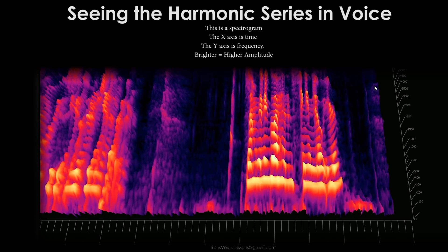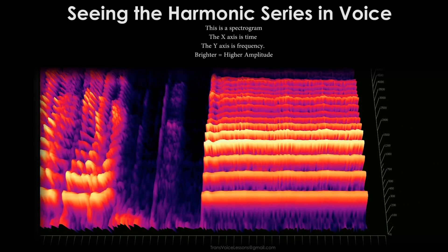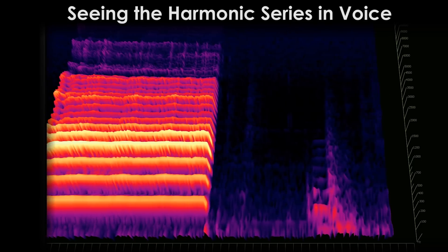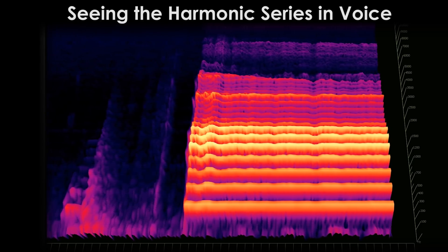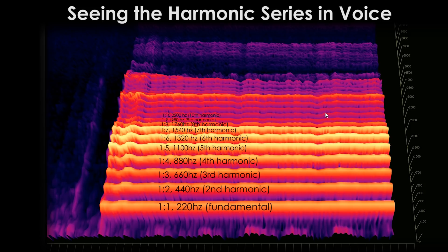Let me go ahead and sing a note here. Each of these lines on screen are what we call a harmonic, a partial, or an overtone, and each is a multiple of the lowest one. I'm going to sing a note at 220 hertz. This is 220, so if I count up 10 of these, the 10th harmonic will be exactly at 2200 hertz, because it is 10 times the frequency of the lowest one.